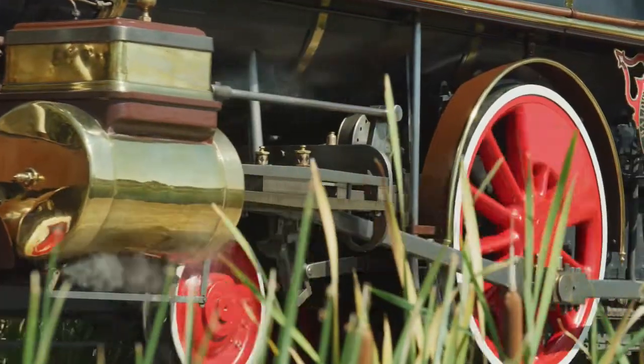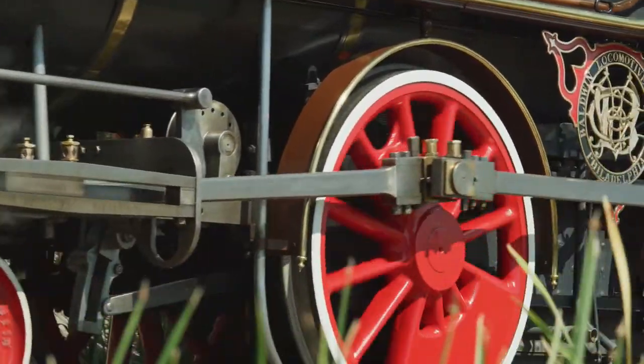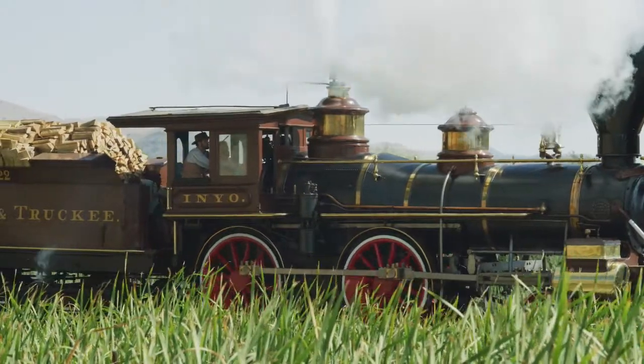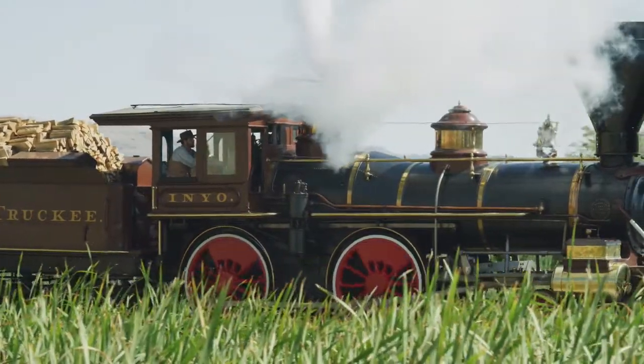Typically these are pistons, and the steam pushes on the front and the back of the piston. And the piston is connected by rods to the wheel, and the wheel turns, and the locomotive goes down the track.